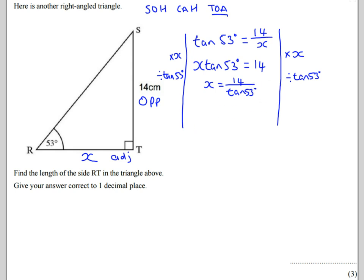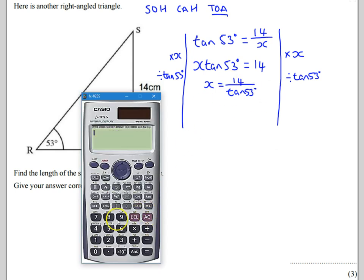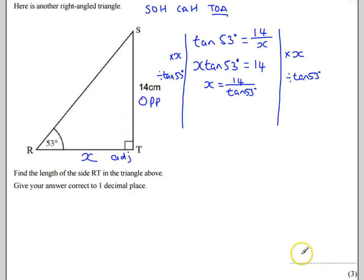So using my calculator now, I can say, well, 14 divided by tan of 53. And that tells me that I've got a length of 10.5 centimetres to 1 decimal place. I should have written here, X would be equal to 10.5. Thanks very much for joining me. I'll see you next time.